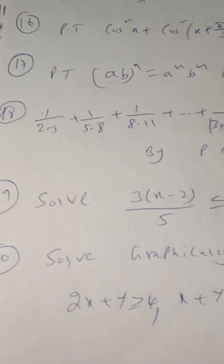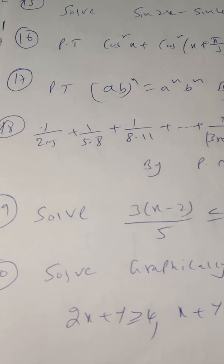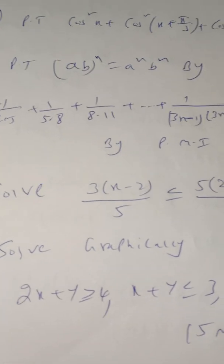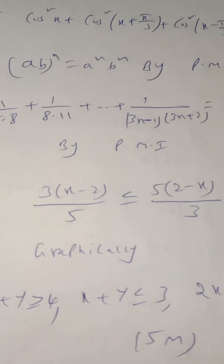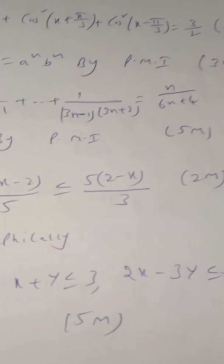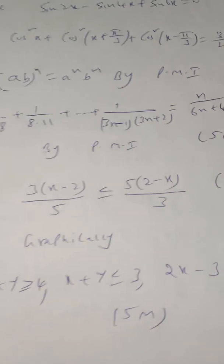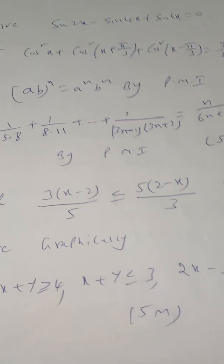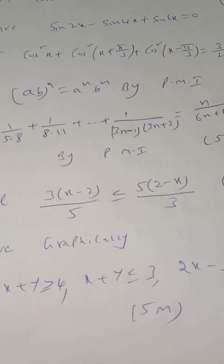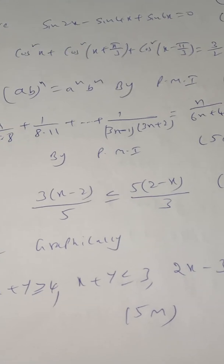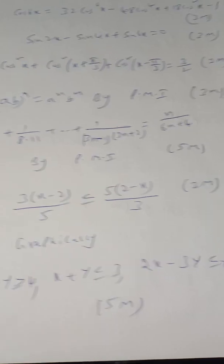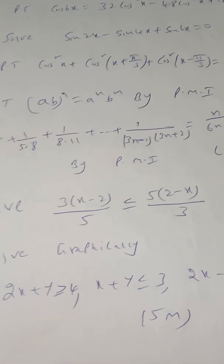Another very very important 5-mark question: solve graphically the system 2x + y ≥ 4, x + y ≤ 3, 2x − 3y ≤ 6. This model — a 3-equation graphical question — is expected for 5 marks in linear inequalities.